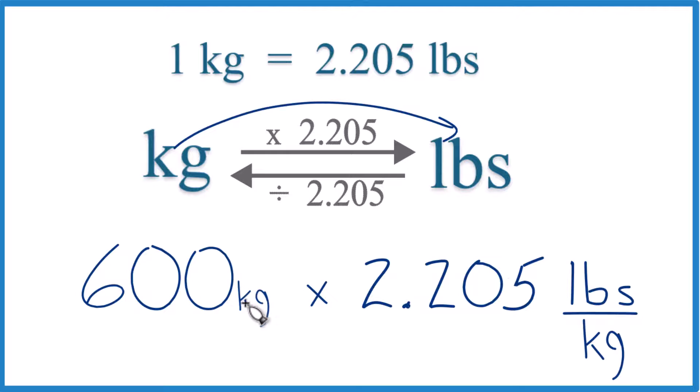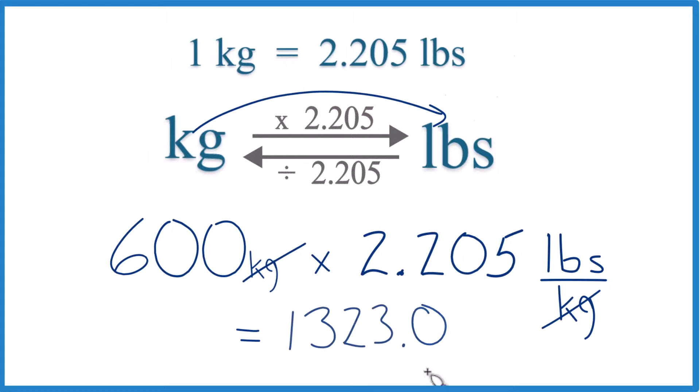We multiply kilograms on the top and the bottom, they cancel out. So it's just 600 times 2.205 pounds. And that gives us 1,323.